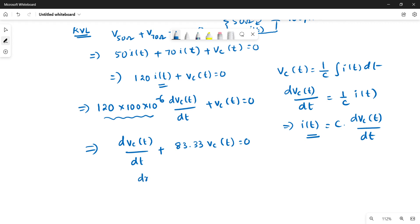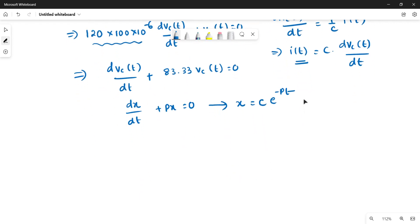Dividing the equation, we will get dVc of t by dt plus 1 by 120 into 100 into 10 power minus 6, which gives us 83.33, times Vc of t equal to 0.